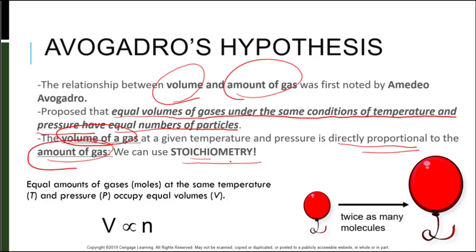So the volume of a gas at a given temperature and pressure is directly proportional to the amount of gas. And we can use stoichiometry to do this. So equal amounts of gases, the moles of different gases, at the same temperature and pressure occupy equal volumes.